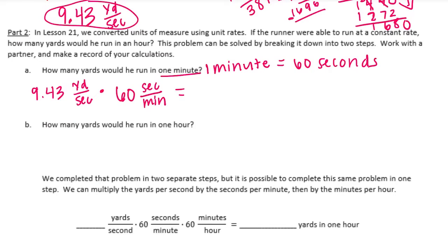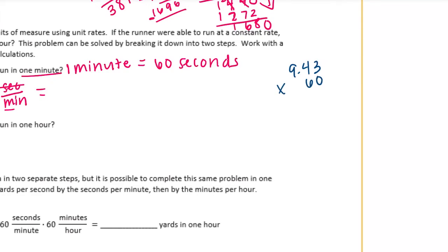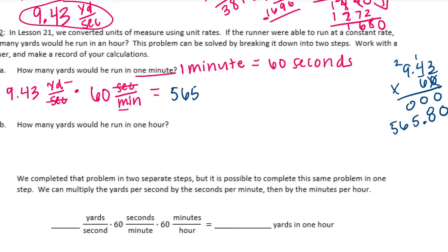The seconds cancel each other out, leaving yards per minute. So we do 60 times 9.43: 6 times 3 is 18, carry 1; 6 times 4 is 24 plus 1 is 25; 6 times 9 is 54 plus 2 is 56. We had two digits behind the decimal point, so we move it two places, getting 565 and 80 hundredths. So the answer is 565.80 yards per minute.